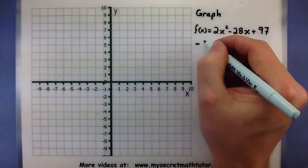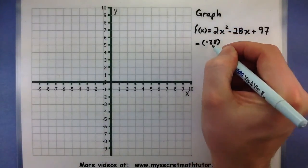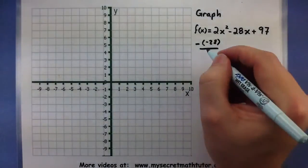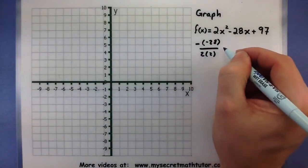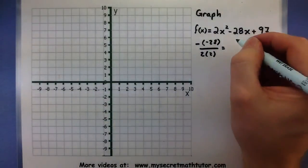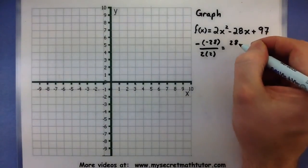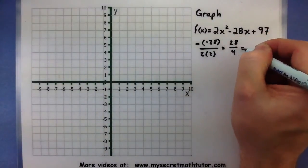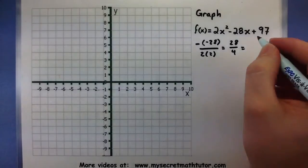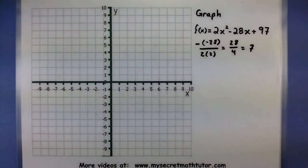So negative b, this would be negative, negative 28, all over 2a. So 2 times 2. Simplifying this, I get a positive 28 on top, a 4 on the bottom. So that will go in there 7 times, so the x coordinate is 7.